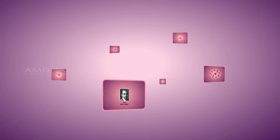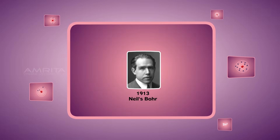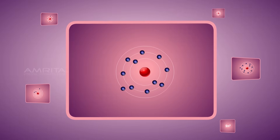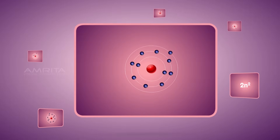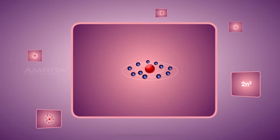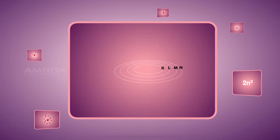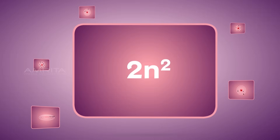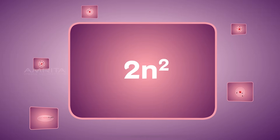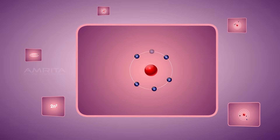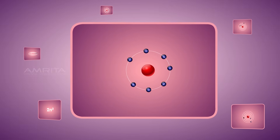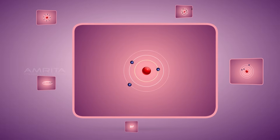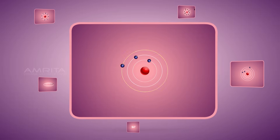Things to remember: In 1913, Danish physicist Niels Bohr proposed Bohr's atomic model. In an atom, electrons revolve around the nucleus in definite energy levels called orbits or shells. The maximum number of electrons in a particular orbit is 2n². The maximum number of electrons in the outermost shell is 8. The orbit closest to the nucleus has minimum energy and the orbit farthest has maximum energy.